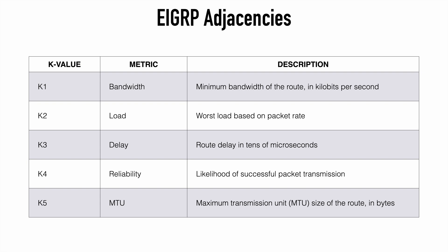These K values are identified as K1 through K5, and we can change those values to influence the metric calculation. We'll discuss these K values more in depth a bit later in the blueprint when we dive into classic metrics and wide metrics.